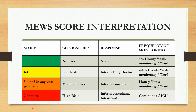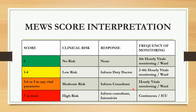For MEWS score interpretation: if the score is 0, there is no risk — continue routine fourth-hourly vitals monitoring and the patient can remain in the ward. If the score is between 1 to 4, the patient is at low risk — inform the duty doctor, check vitals every 2 to 4 hourly, and the patient can remain in the ward. If the score is between 5 to 6, or 3 in any single vital parameter, the patient is at moderate risk — inform the consultant; the patient may remain in the ward or be shifted to the intensive care unit based on the clinical decision.